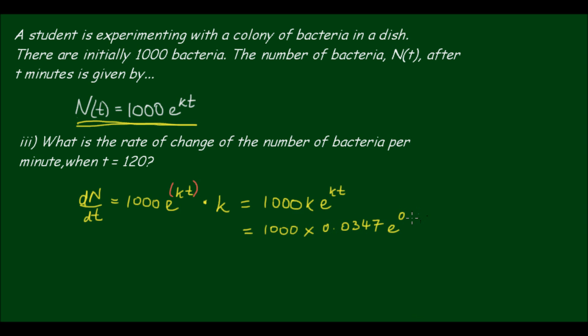So if we substitute that in. So if we multiply 0.0347 by 1000, we will be moving the decimal place to the right by 3. So we should end up with 34.7 e to the 0.0347 t.